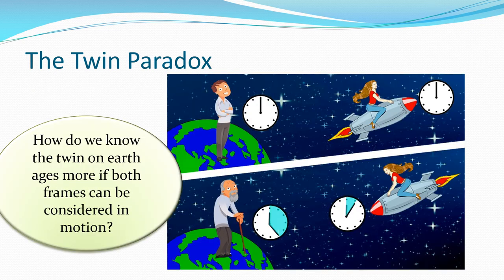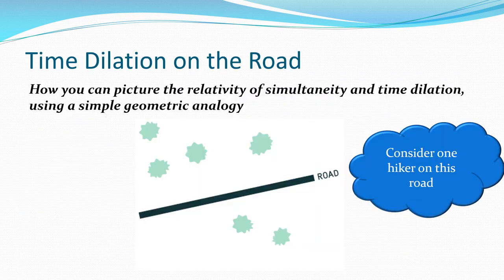Back to our twin paradox: one twin stays on Earth, one travels off in a rocket. When they return the one on the rocket has aged less. But let's consider inertial reference frames — all motion is relative. The twin on Earth sees the rocket travel away and come back, but the twin on the rocket could just as easily see the Earth recede and then come back towards them. So why does one twin age more than the other if all frames are relative?